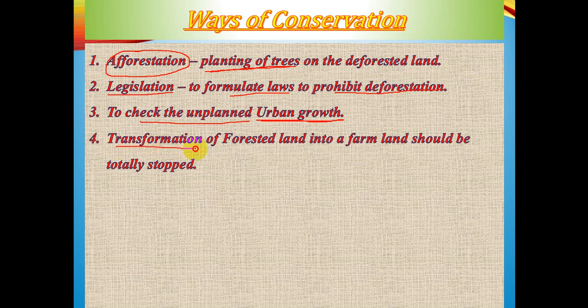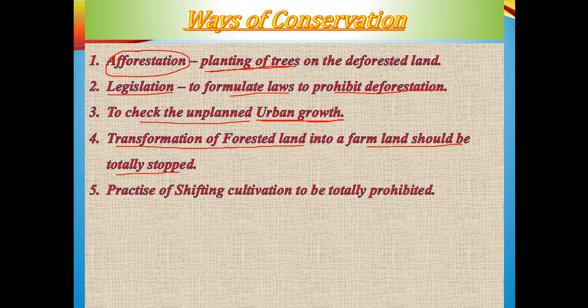The fourth way is to stop transforming forested land into farmland. As population grows and food demand increases, people grab forested areas for farming. Instead, we should practice multiple cropping or multiple farming on existing farmland to reduce pressure on forests.